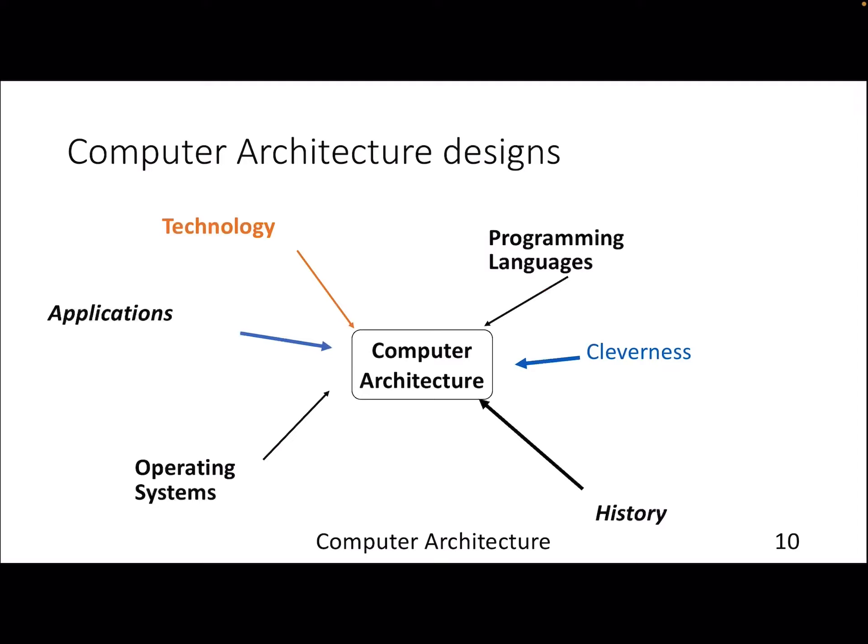Computer architecture designs are driven by various entities in the system stack, like the operating system, programming languages, and compilers. At the same time, new applications — such as computer vision and deep learning workloads — also shape computer architecture. Technology is another driver, and we'll go into those details later. It also takes into account history: how processors were designed in the past and what lessons can be applied to build better processors, memory, and chips.